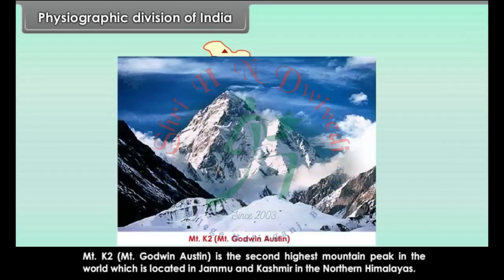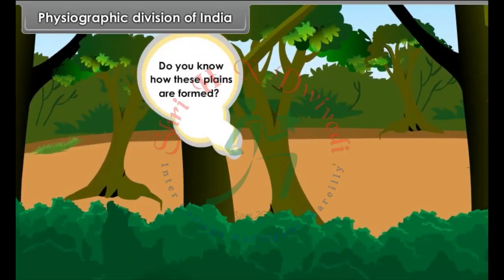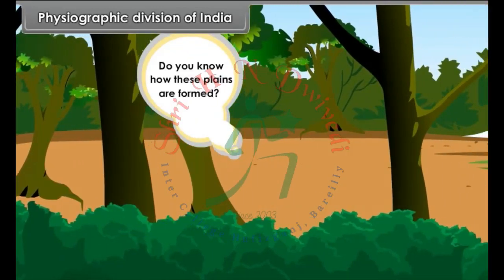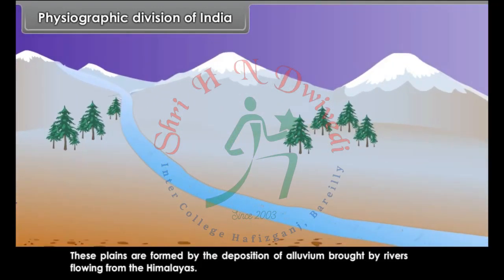Mount K2 (Mount Godwin-Austen) is the second highest mountain peak in the world, located in Jammu and Kashmir in the Northern Himalayas. To the south of the Himalayas, there is a vast stretch of relatively flat surface called the Northern Plains or Great Indian Plains. These plains are formed by the deposition of alluvium brought by rivers flowing from the Himalayas.